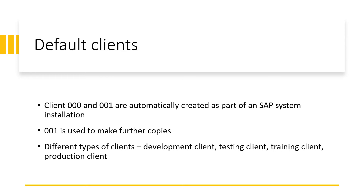For example, a copy of client 001 is made to create a new client 100, which can then act as a development client where configuration and workbench changes are made. Clients in an SAP system are used for various purposes based on technical and business requirements. For example, a development client is used to create new developments and customizations, a testing client is used to perform testing, a training client is used to offer training to end users, and a production client is used for actual business operations.